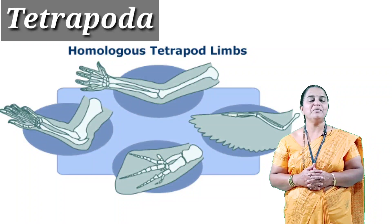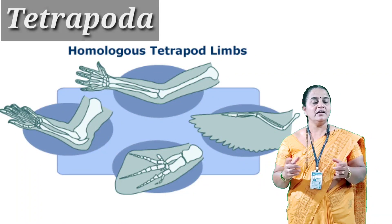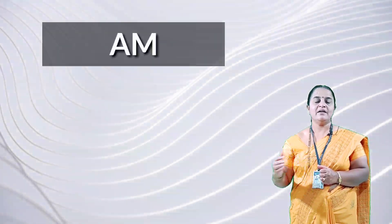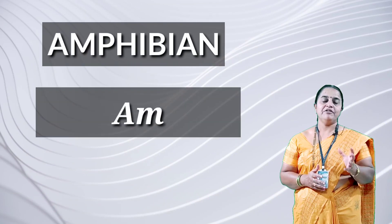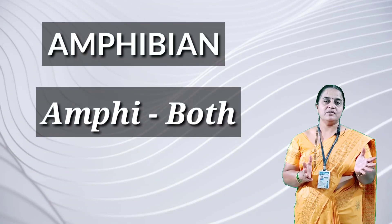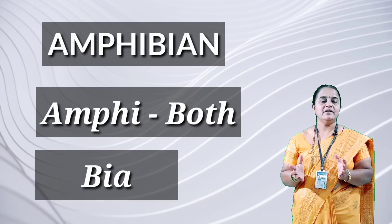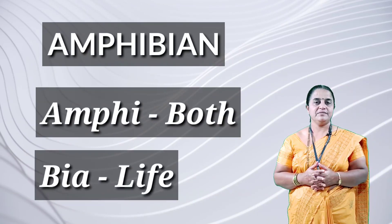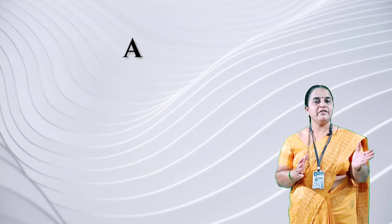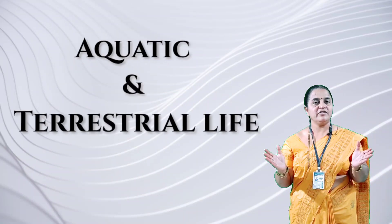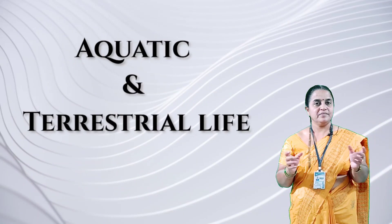It belongs to superclass Tetrapoda as it has two pairs of limbs, but they are unequal. Hence it is amphibian. 'Amphi' means both, 'bios' means life — organisms adapted for both aquatic and terrestrial life.